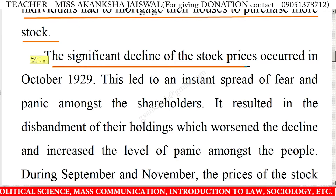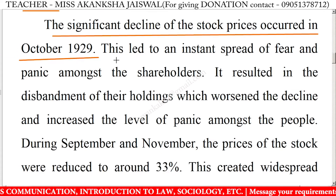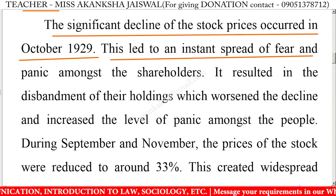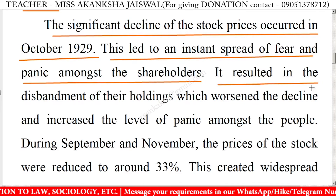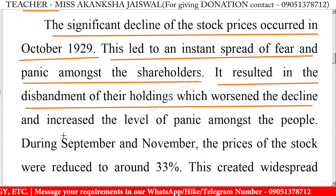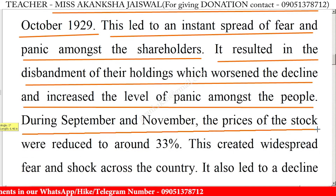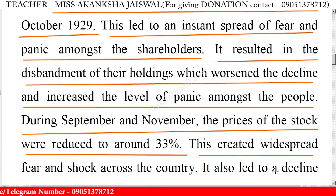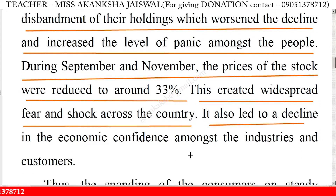The significant decline of the stock prices occurred in October 1929. This led to an instant spread of fear and panic amongst the shareholders, resulting in the disbandment of their holdings, which worsened the decline and increased the level of panic. During September and November, the prices of the stock were reduced to around 33 percent, creating widespread fear and shock across the country.